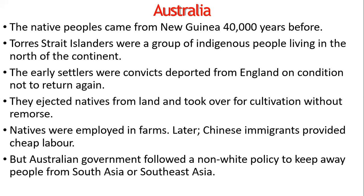The experiment of settling Brazil with Portuguese convicts had been abandoned when their violent behavior provoked angry reprisals from the natives. The British had adopted the same practice in the American colonies until they became independent, then they continued it in Australia. Most of the early settlers were convicts who had been deported from England, and when their jail term ended they were allowed to live as free people in Australia, only on the condition that they did not return to Britain.